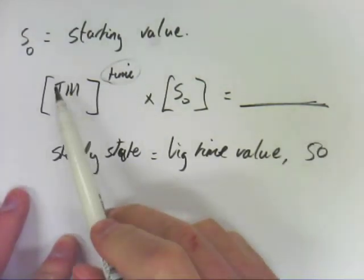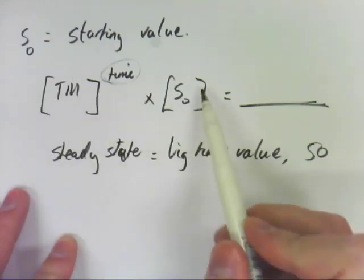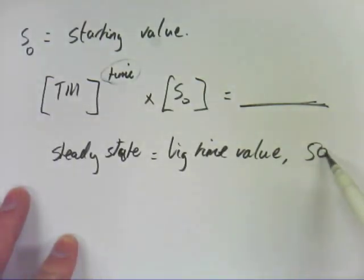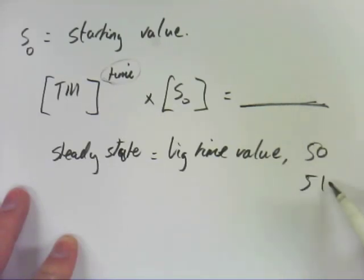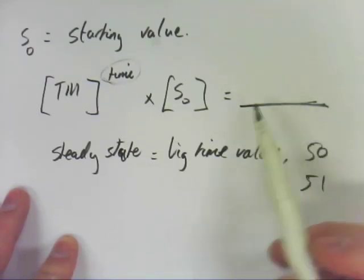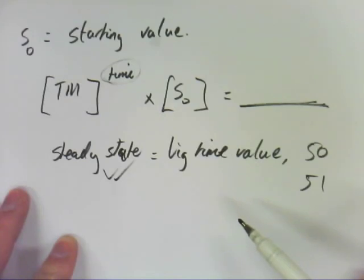So you plug that into your calculator, you define your transition matrix, define your S0, do your 50, do it all on your calculator, come out with an answer. And then you do 51 just to test, and if you come out with the same answer, you're at a steady state. If you come out with a different answer, go to a bigger number, and then keep going until you get a steady state. They will hit a steady state sooner or later.